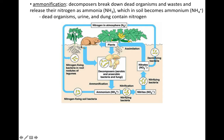Ammonification: things die, decomposers break them down. Decomposers break down dead things and waste products, and they turn them into ammonia, which then gets turned into an ion called ammonium. The decomposers break down the proteins and nitrogen that organisms were made out of, and eventually turn it into ammonium. This is called ammonification, and it's important because this is a couple of steps away from nitrate, which is a usable form for plants.